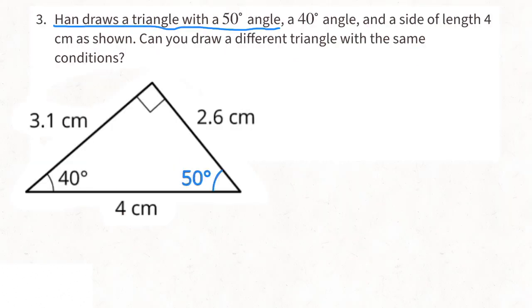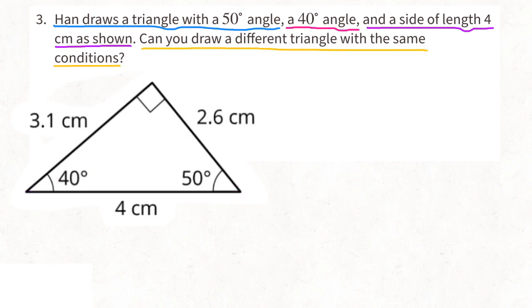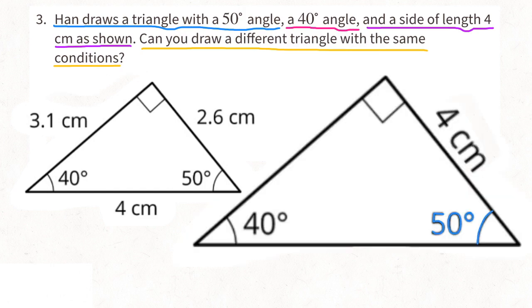Number 3: Hahn draws a triangle with a 50-degree angle, a 40-degree angle, and a side length of 4 centimeters as shown. Can you draw a different triangle with the same conditions? Sure. Here's a triangle with a 50-degree angle, a 40-degree angle, and a side length of 4 centimeters.